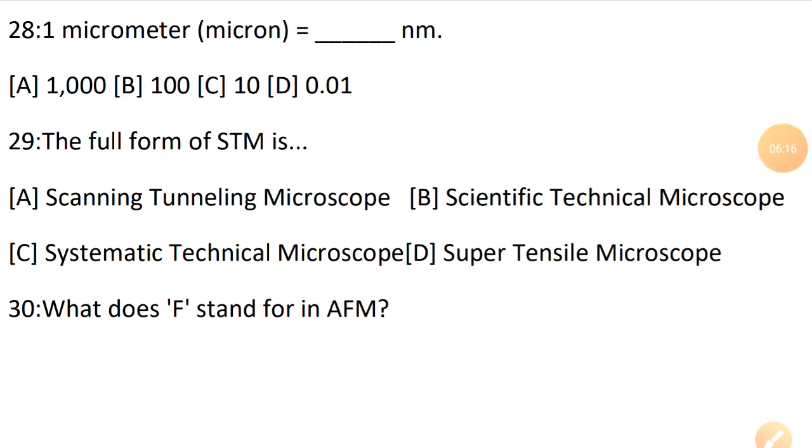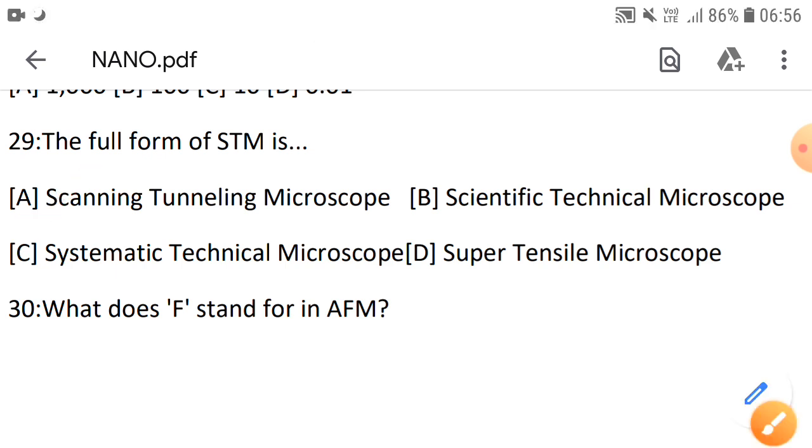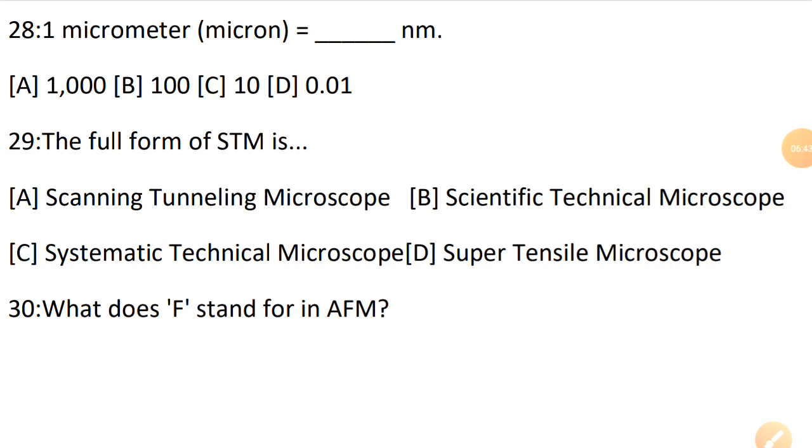Next: the full form of STM is? STM is basically a microscope which we use to see surfaces at very small level. Actually STM is Scanning Tunneling Microscope. So answer is option A. STM works with a very sharp metal wire whose tip is very sharp. When you bring it very close above any surface and apply voltage to this microscope, then you can see that surface at very small level. You can easily see all the small minor particles in it with this microscope.